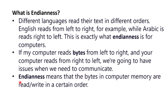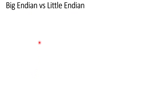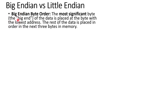Endianness means that the bytes in computer memory are read or written in a certain order — it tells us in which order we are going to read or write data from memory. Now we will mainly discuss what is Big Endian and Little Endian with an example.